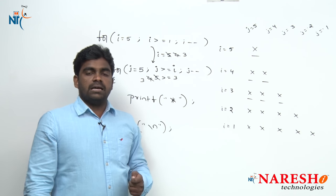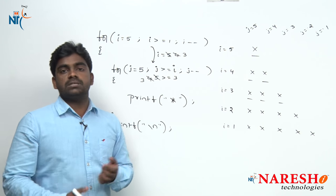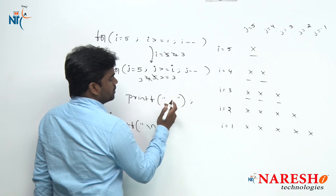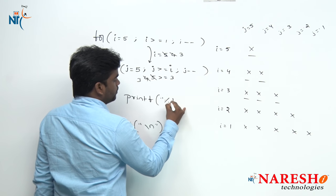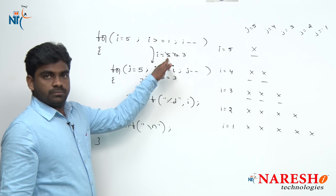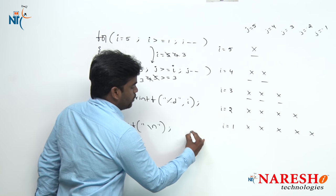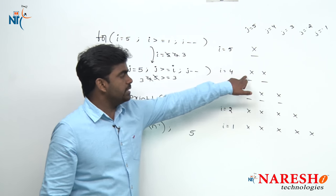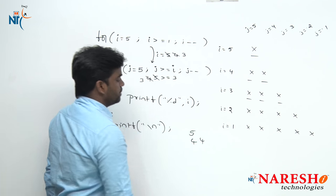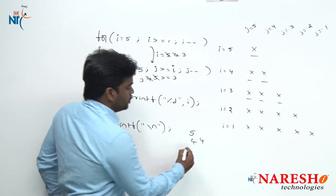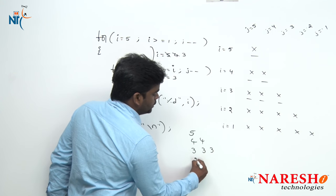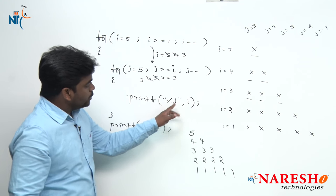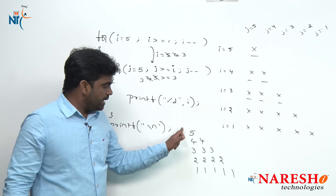In some interviews they will ask you to print not only stars but numbers as well — very simple. In this situation, instead of star, suppose if you are printing i value: in the first iteration i value is 5, so only 1 time 5 it will print. In the second iteration i value is 4, so 2 times it will print 4 and 4. Next third iteration i value 3, so 3 times. Next i value 2, so 4 times. Next i value 1. This pattern will print whenever you are printing i values.